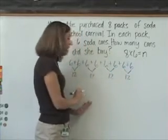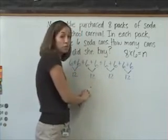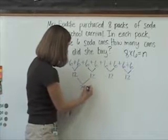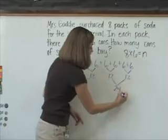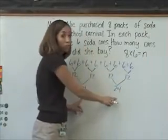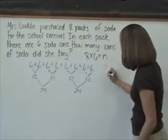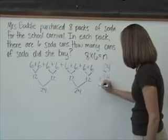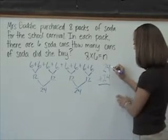Then students can either add all four 12s together, or if they know that 12 plus 12 is 24, they can go ahead and add those. Then students can take the two partial products and add them together.